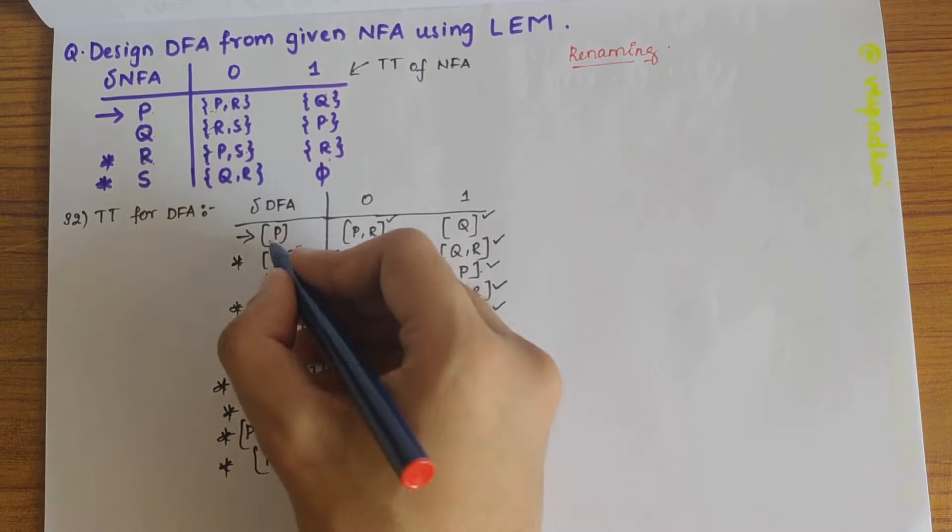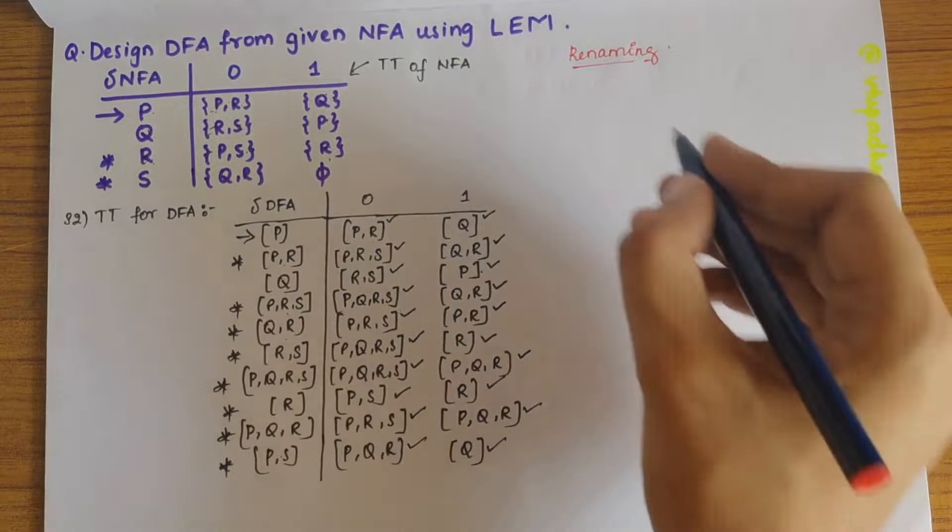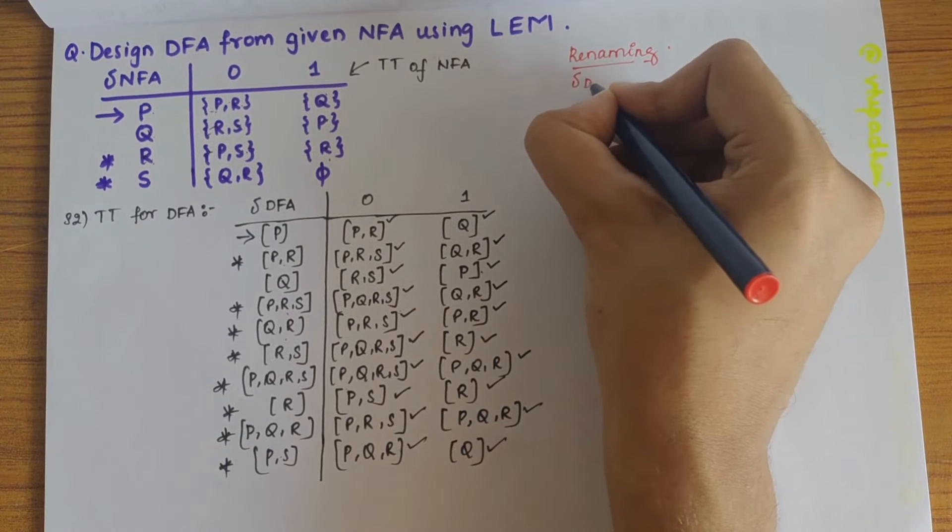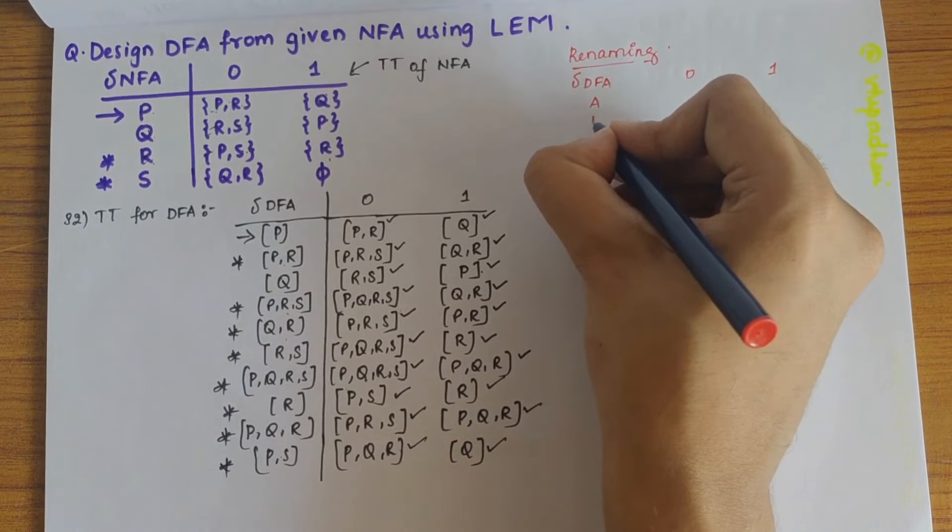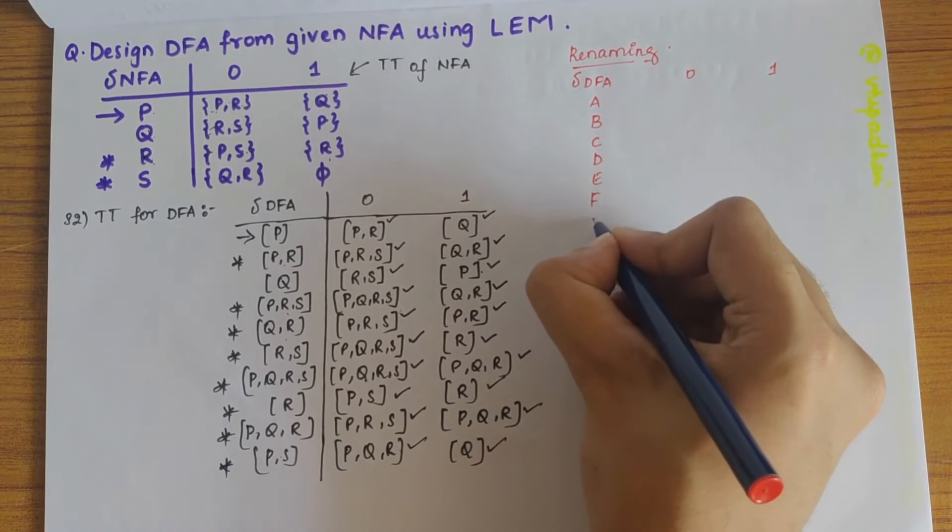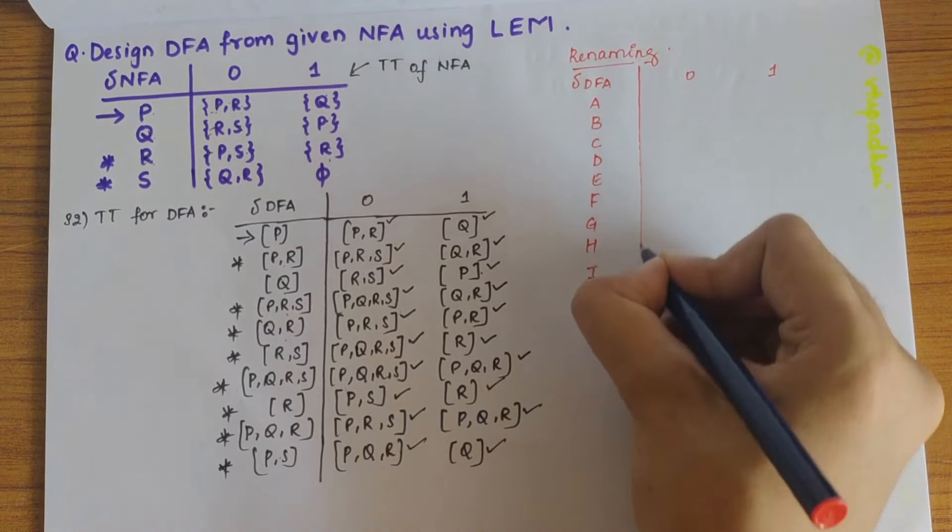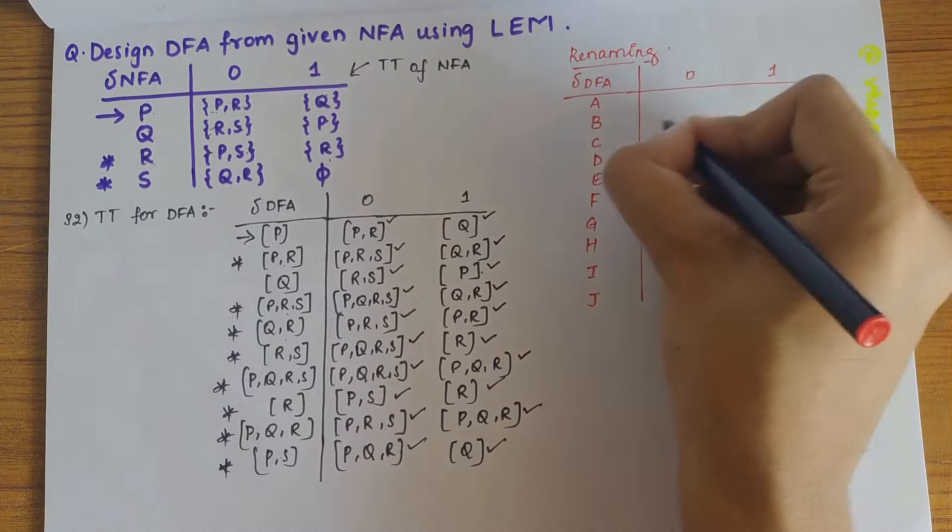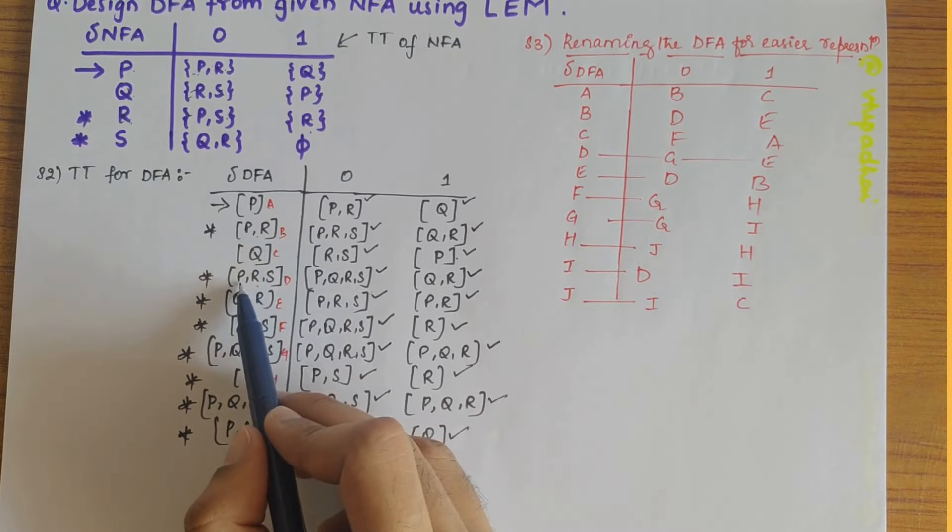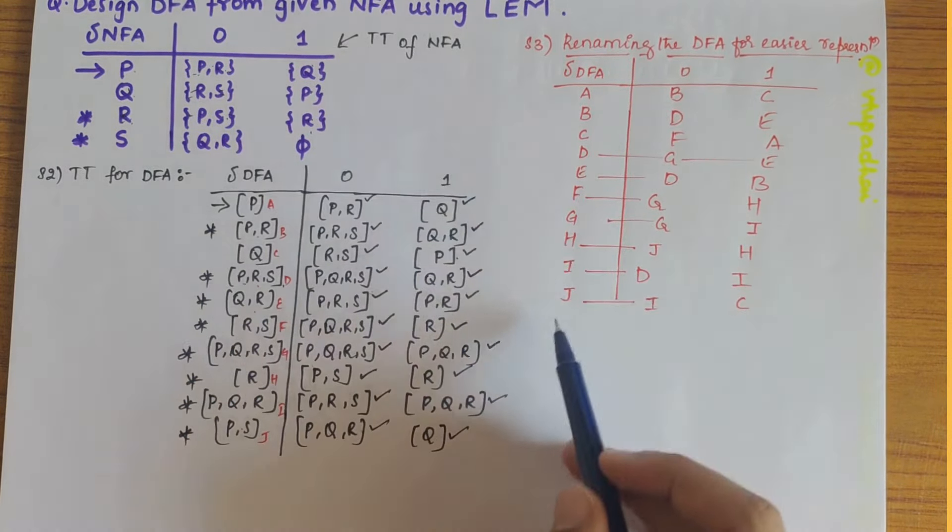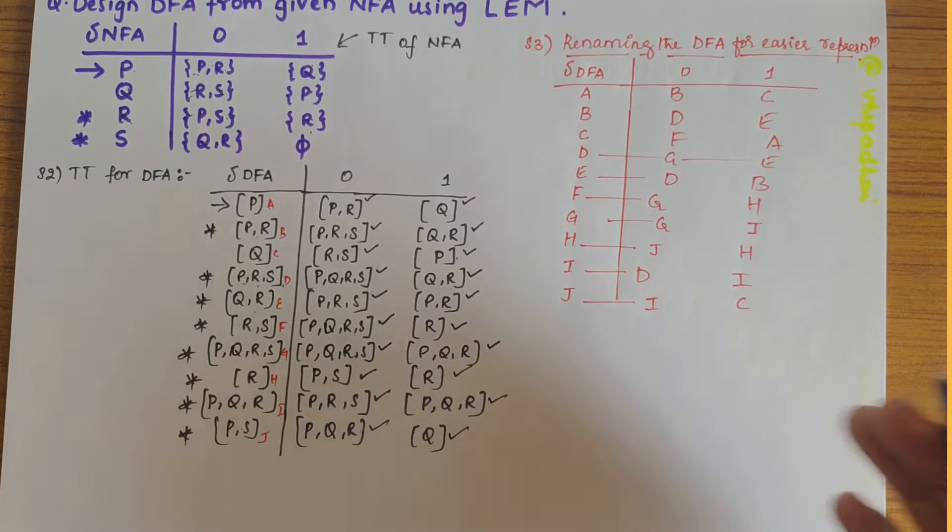So let's take all these as A, B, C, D, E, F, G, H, I and J. So DFA, 0 and 1 here. So I'll write A, B, C, D, E, F, G, H, I and J. So here I've taken P as A, PRS as B, Q as C, PQRS as D and defined the transition table again for easier representation.